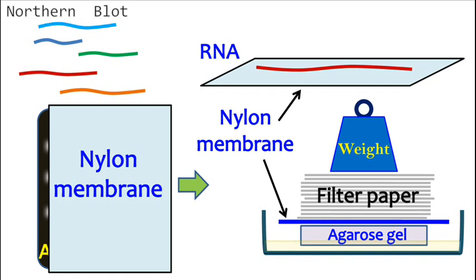Once binding occurs, the RNA is immobilized on the membrane by treating the membrane with UV light or heat.